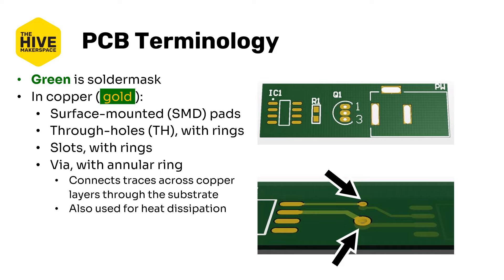Through holes describe any circular hole through which a component — electrical or not — is placed. As mentioned before, these are typically plated by default. Slots are non-circular through holes and may or may not be plated depending on your design. Vias are the interlayer connection holes that must be plated and can also be used for heat conduction and dissipation.